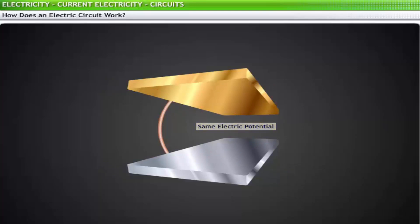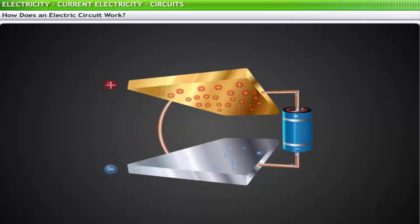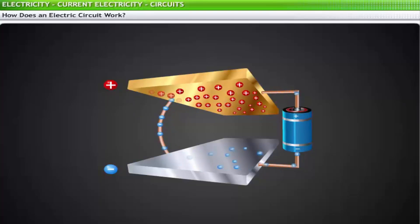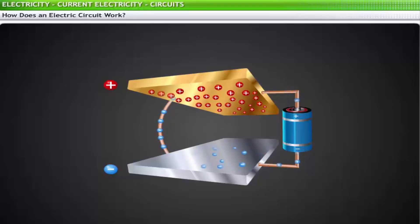In the absence of an electric potential difference, there will be no charge flow. For a true circuit, charge must flow continuously through a complete loop, returning to its original position and cycling through again.